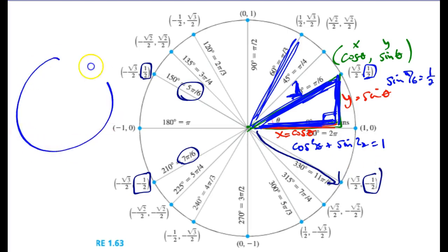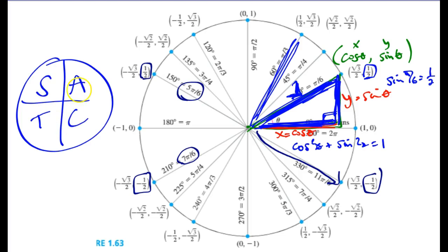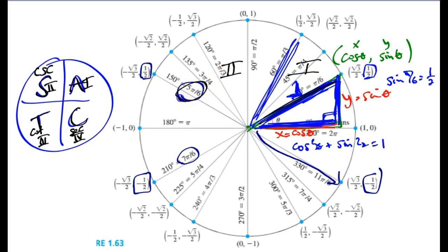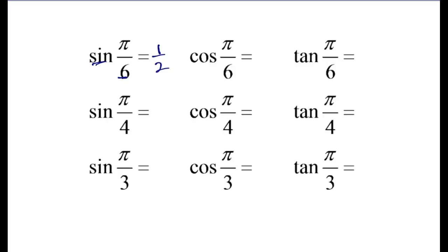One way to remember whether trig values are positive or negative is to remember 'All Students Take Calculus.' All six trig functions are positive in the first quadrant. Sine and its reciprocal cosecant are positive in the second. Tangent and cotangent are positive in the third. Cosine and its reciprocal secant are positive in the fourth. So sine of pi/6 and 5pi/6 are positive (first and second quadrant), while 7pi/6 and 11pi/6 are negative.